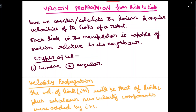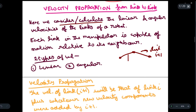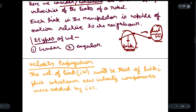Today we will do velocity propagation from link to link. We will consider the linear velocity and the angular velocity of the links of a robot. Each link in the manipulator is capable of motion relative to its neighbor. Suppose we have joints and two links — the motion of link i+1 will be affected by link i. We will be considering two types of velocities: linear velocity and angular velocity.